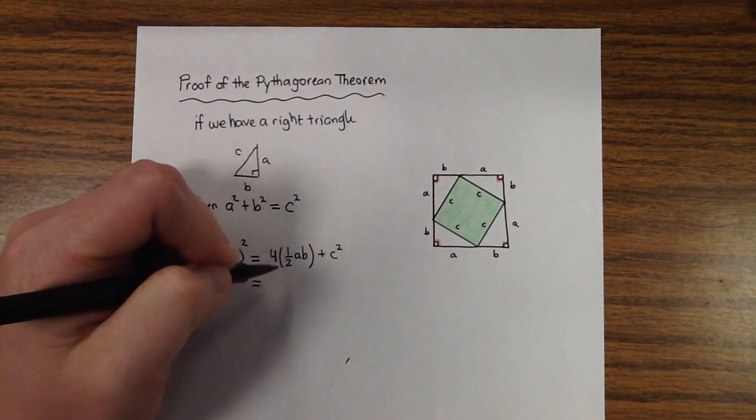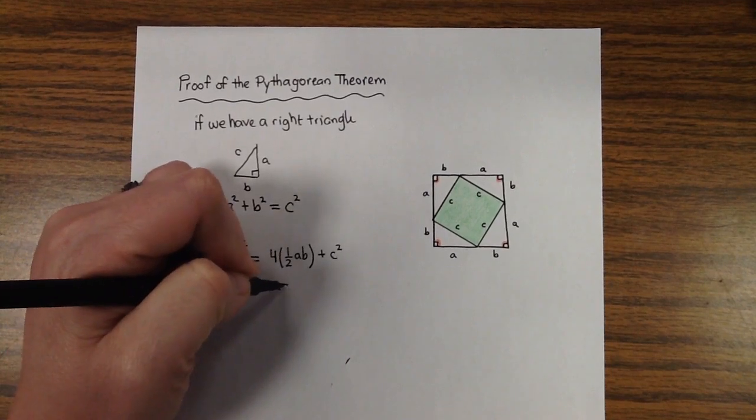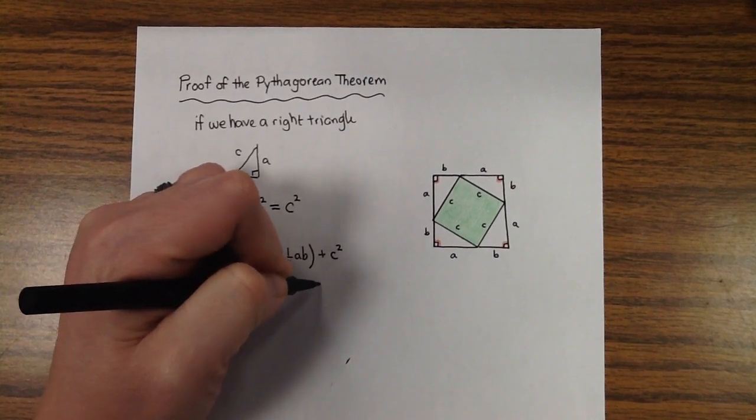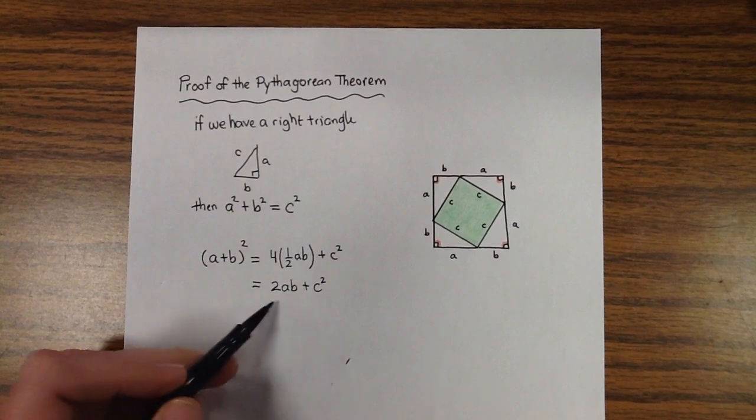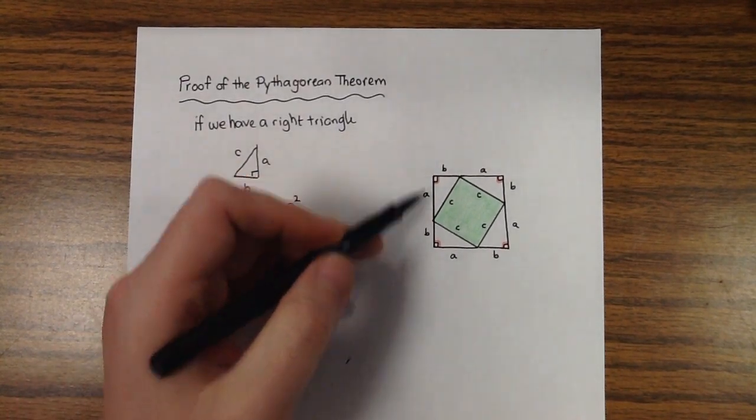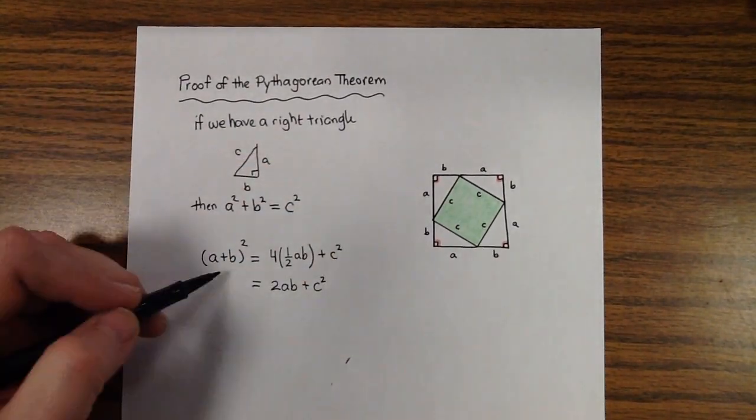Now, it turns out that four times a half is two. And so I end up with 2AB plus C squared. That represents the full area of the entire square. And so does this.